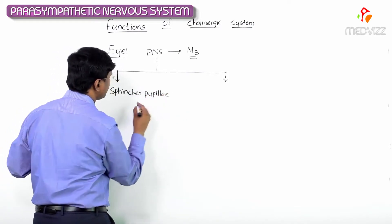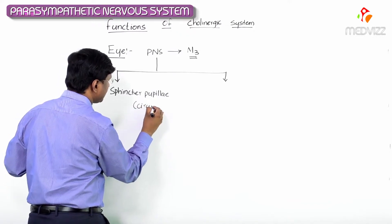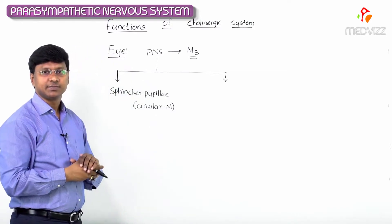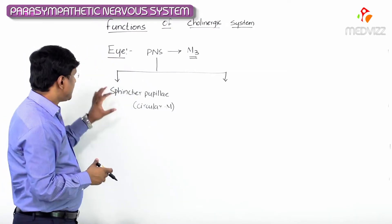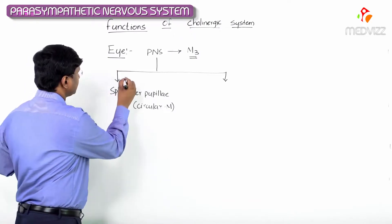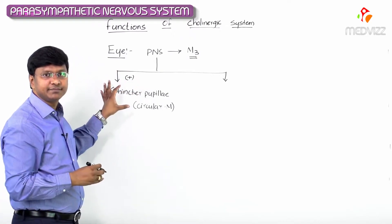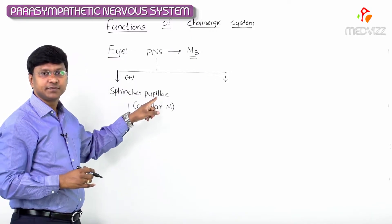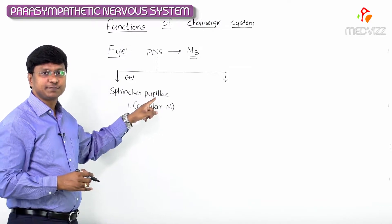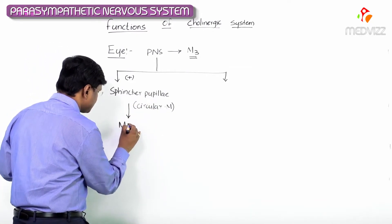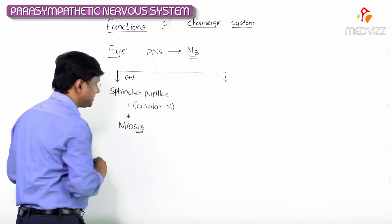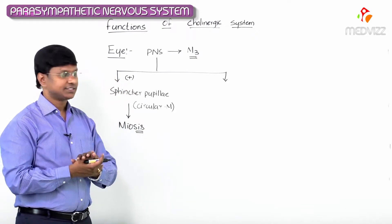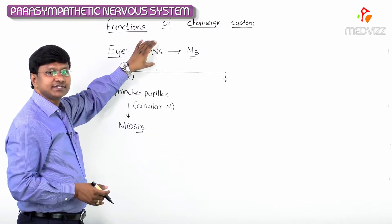The sphincter pupillae are the circular muscles of the eye. By stimulating the sphincter pupillae, there will be constriction of the sphincter pupillae, and because of that constriction, it will result in miosis. So miosis is the constriction of the pupil.